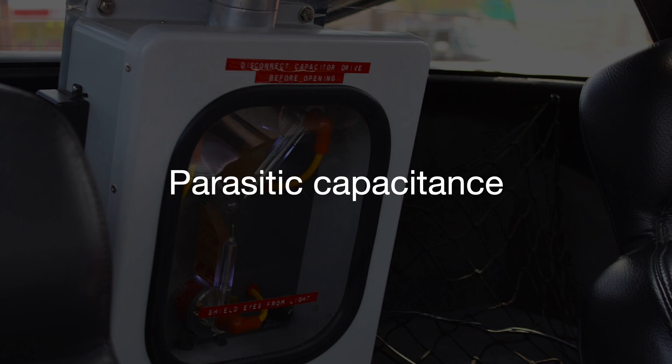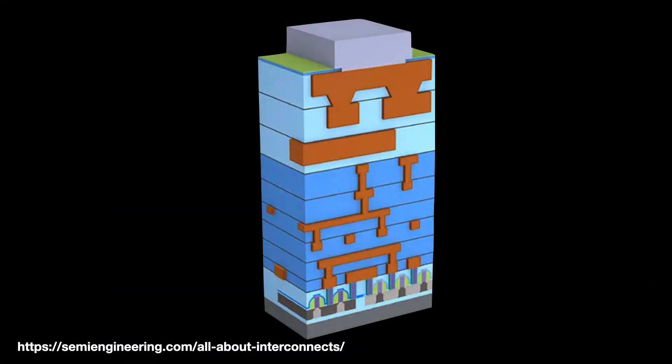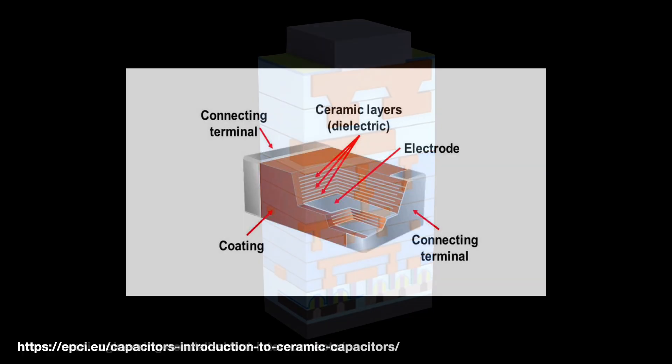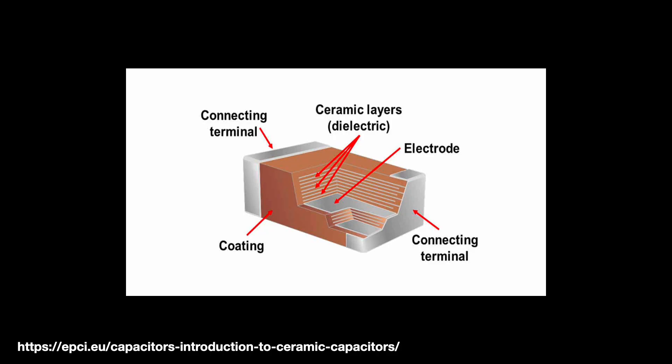This exists because an integrated circuit is made up of conducting layers and insulating layers. When you put an insulating layer in between two conducting layers, well gee, that kind of looks like a capacitor. An unwanted capacitor.